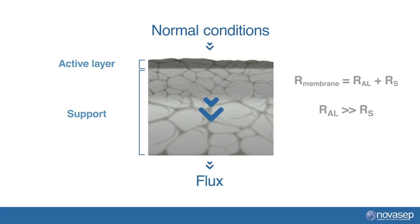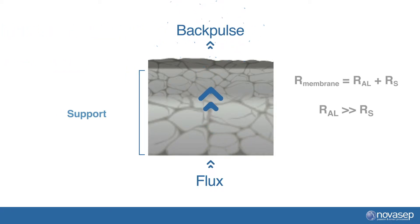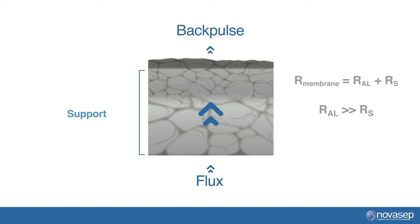For this reason, the active layer is kept as thin as possible. In normal conditions, flow first passes through this dense active layer and then easily flows through the support. During a back pulse it is the opposite. If the back pulse is not used properly, you can damage the bonding between the active layer and the support layer.